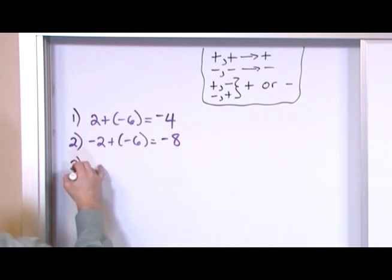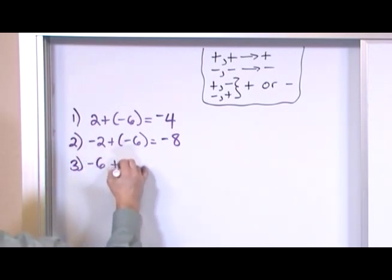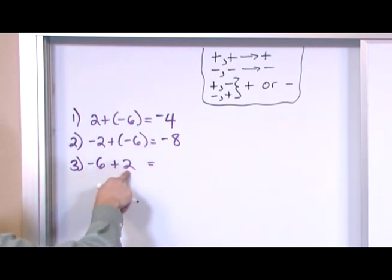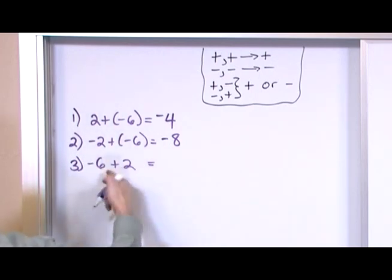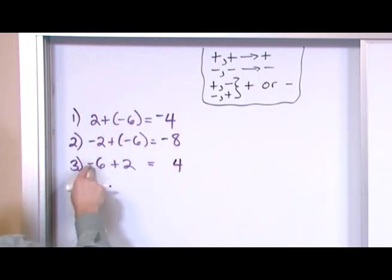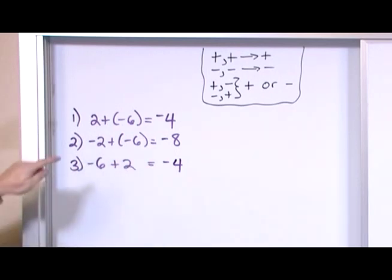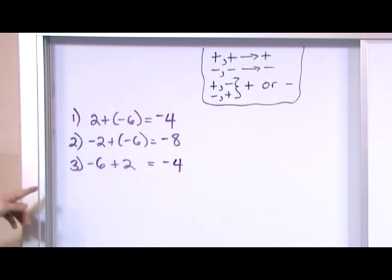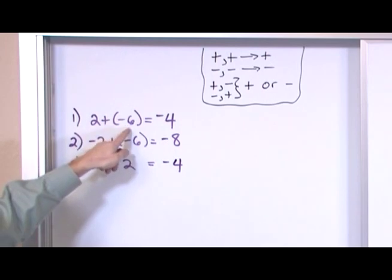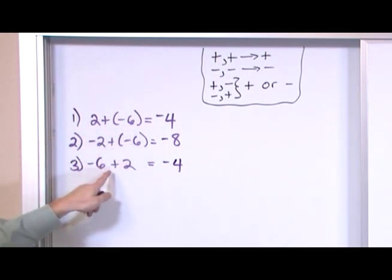Number 3. Negative 6 plus 2. Here it's negative plus positive, so they're different signs. When they're different, I subtract them. 6 minus 2 is 4, and the bigger number absolute value-wise is where my sign comes from. Notice that number 1 and number 3 give me exactly the same answer. 2 plus negative 6 is exactly the same thing as negative 6 plus 2.